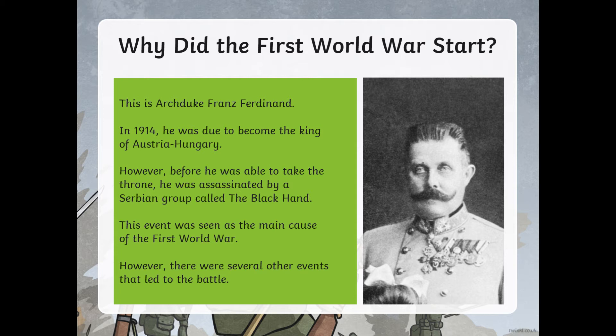So why did the First World War start? This is a man called Archduke Franz Ferdinand. In 1914, he was due to become King of Austria-Hungary. However, before he was able to take the throne, he was assassinated by a Serbian group called the Black Hand. This event was seen as the main cause of the First World War. However, there are several other events that also led to the battle.